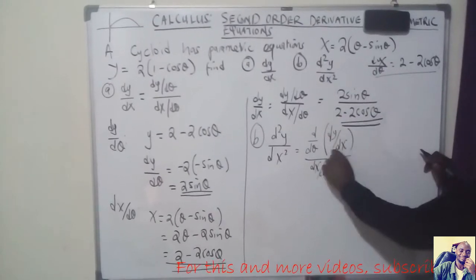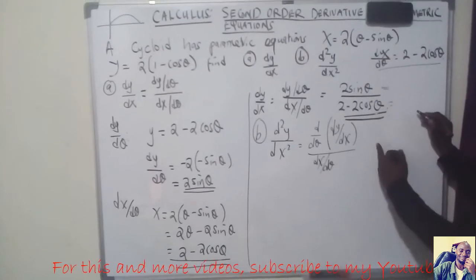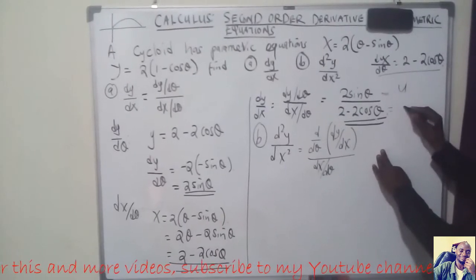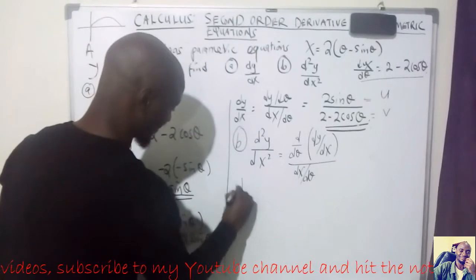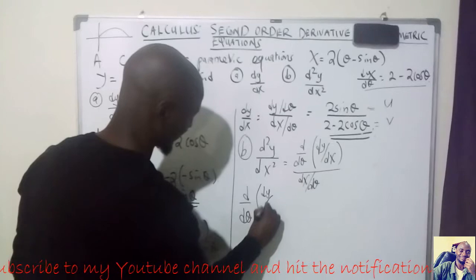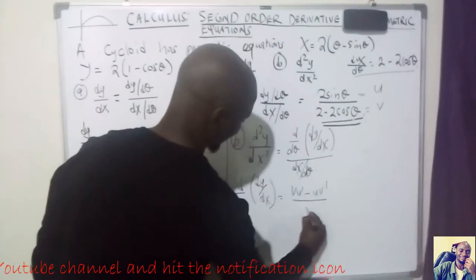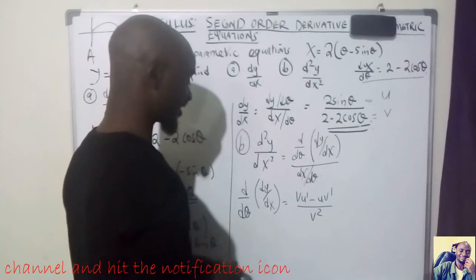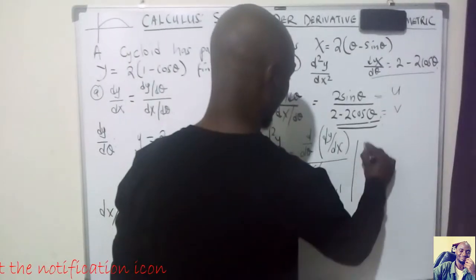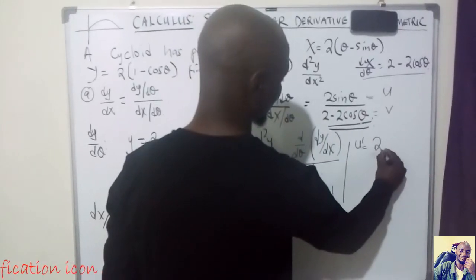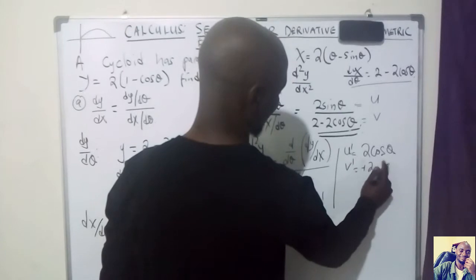We need to differentiate dy/dx, which is a fraction, so we are going to use the quotient rule. Identifying u and v: the numerator u equals 2 sine theta, and the denominator v equals 2 minus 2 cos theta. Then u prime — differentiating 2 sine theta — gives 2 cos theta, and v prime — differentiating 2 minus 2 cos theta — gives 2 sin theta.